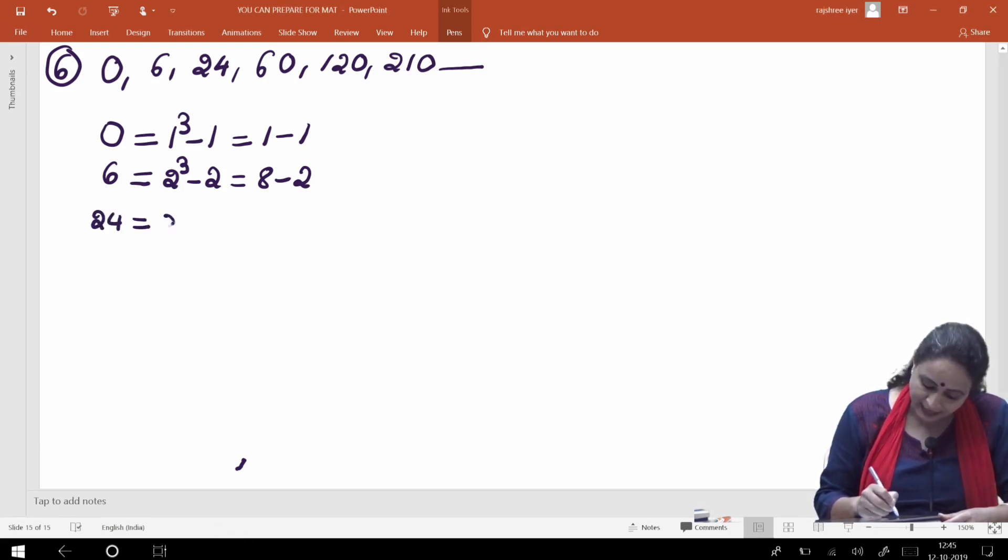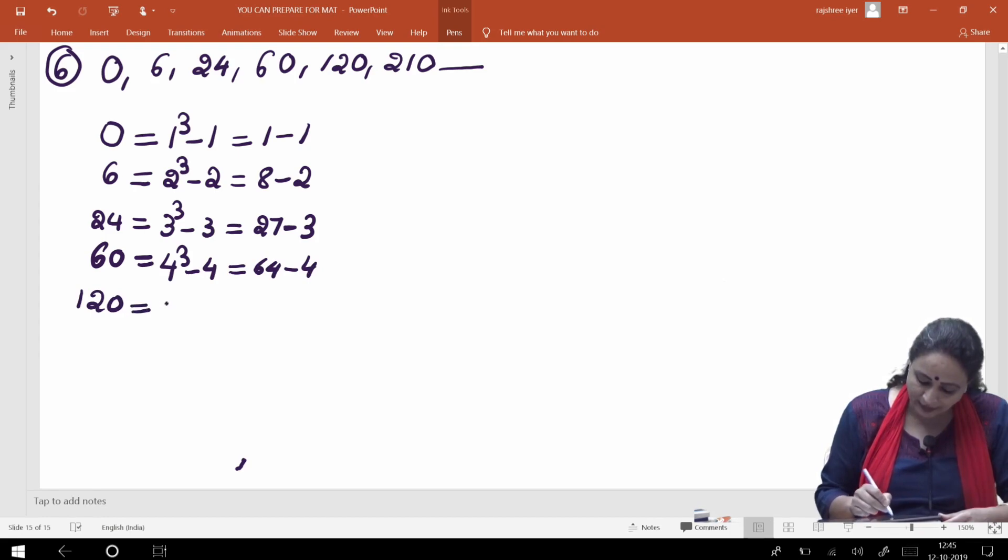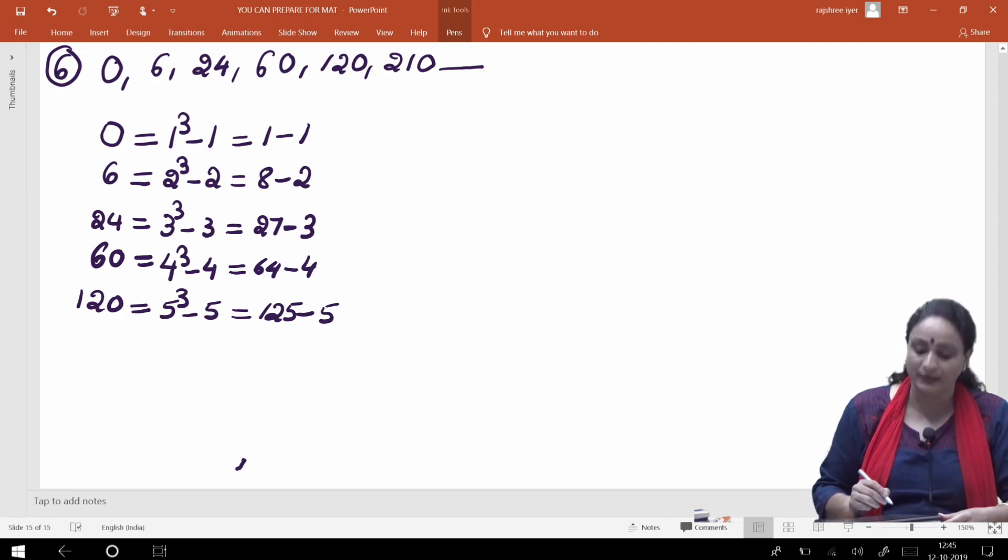Chaliye third number ke liye try karta hai, that is 24. Toh 24 ko aap kya likh sakti ho? Can I write it as, 3 cube minus 3? Yes. That is 27 minus 3. Then the fourth number, it is equal to 60. Abhi 60 ko kya likha jaye? 60 ko kya hum likh sakti ho? 4 cube minus 4? Yes. 64 minus 4. 120 is the next number. I can write it as, 5 cube minus 5, which is equal to 125 minus 5, 120 aata hai. Toh isi series par aage, that is 210. 210 can be written as, 6 cube minus 6. 6 cube is? Yes. 216 minus 6, which is equal to 210.